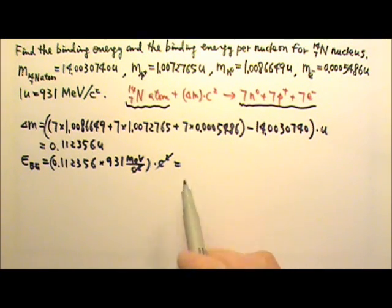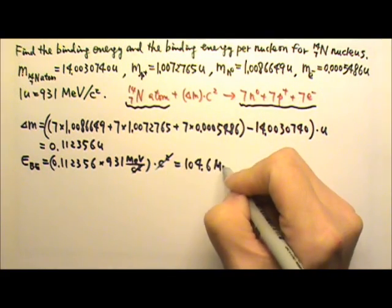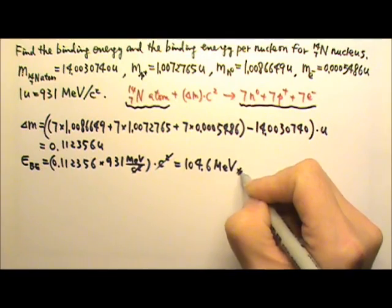Now we can round and then we'll get 104.6 mega eVs. And that's the total binding energy.